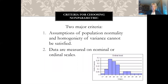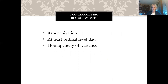There are two major criteria for choosing non-parametric: first, the assumptions of population normality and homogeneity of variance cannot be satisfied; and second, the data are measured on nominal or ordinal scales. For non-parametric requirements, we still want randomization, at least ordinal level data, and homogeneity of variance.